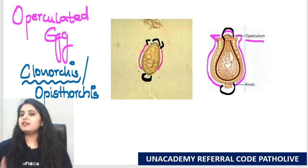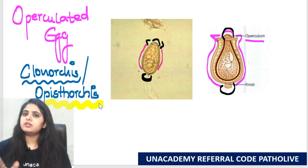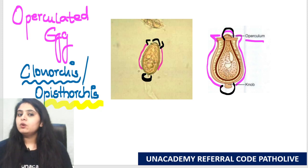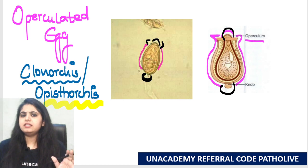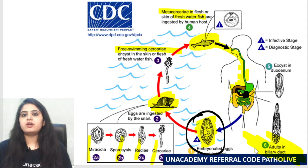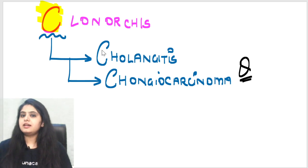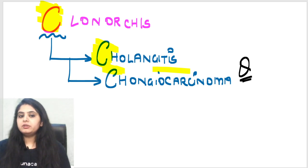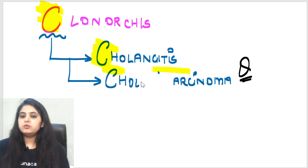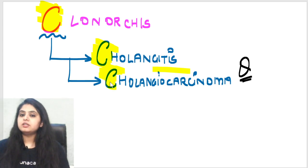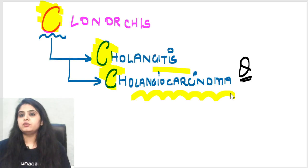This is the life cycle of Clonorchis, which is similar to the life cycle of Opisthorchis — even the egg is similar. Now, the adult worms are residing in the biliary tract, so the manifestations of Clonorchis will be associated with the biliary tract: cholangitis (inflammation) and cholangiocarcinoma — cancer of the biliary tract. A previous year question: which parasite can cause cancer of the biliary tract? C for C — Clonorchis causes cholangiocarcinoma.